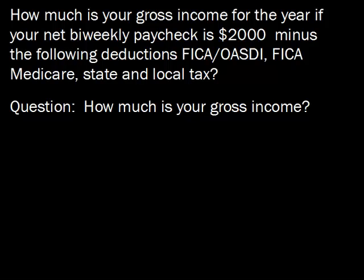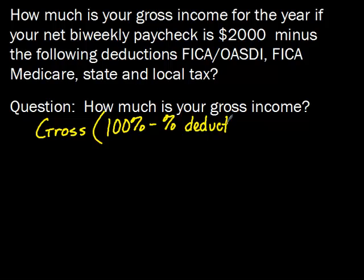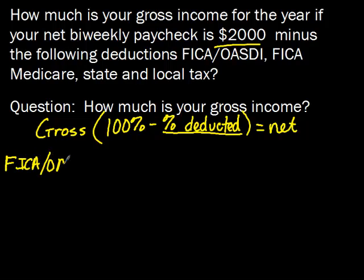There's actually a formula we can use for this. In the last problem, we took our gross pay, multiplied it by our deductions, and got the amount deducted. If we take 100% minus our deduction percentages and multiply that by gross pay, we get our net pay. We can use this relationship to work backwards. We want to find the gross pay. We know the net pay is $2,000. The only other thing we need is the total percentage deducted, which comes from the following deductions: FICA OASDI, FICA Medicare, and state and local tax.